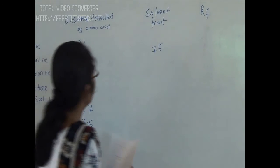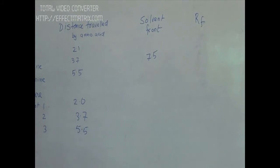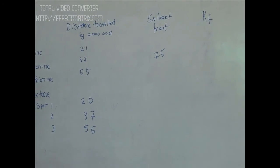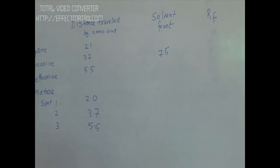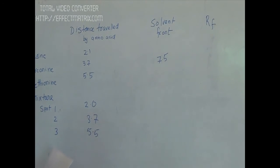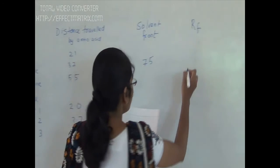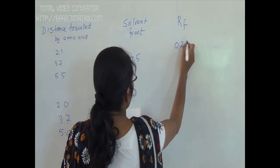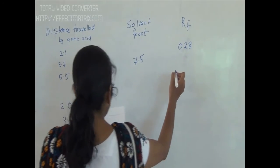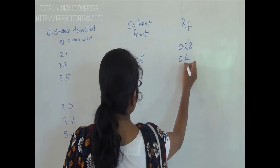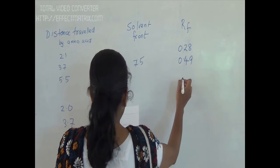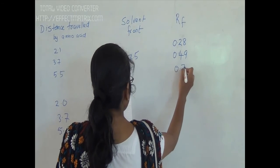Now we can calculate Rf values as the ratio of distance travelled by amino acid to distance travelled by solvent front. If we divide 2.1 by 7.5, we get 0.28 for lysine. For methionine it is 0.49, and for threonine it is 0.73.